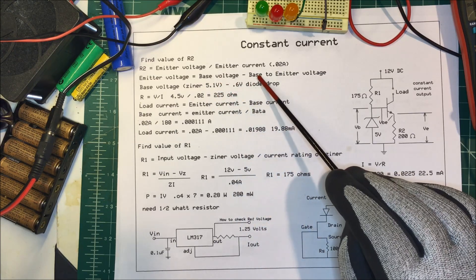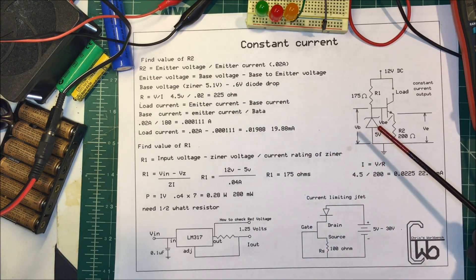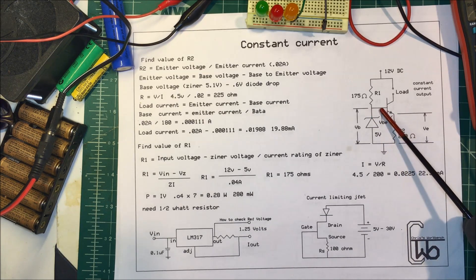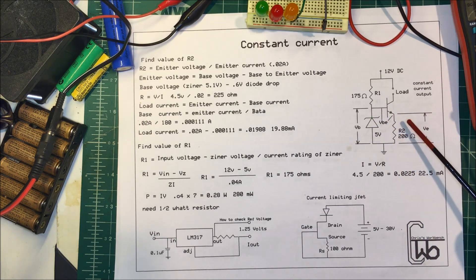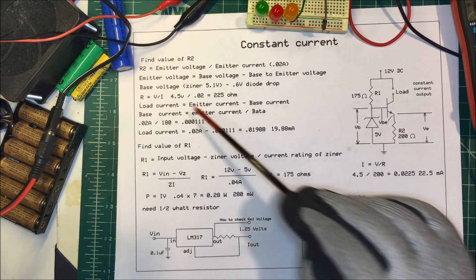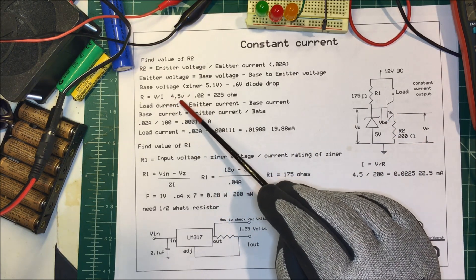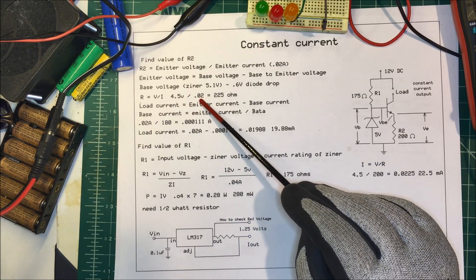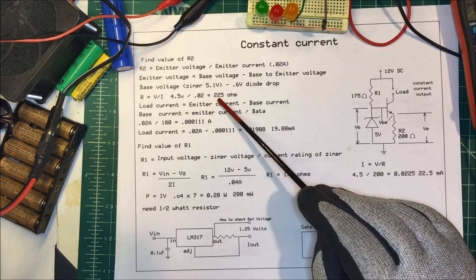The emitter voltage equals the base voltage minus the base-to-emitter voltage. So we have 5.1 volts here, but we're going to drop 0.6 volts across this junction, so from emitter to ground we're only going to have 4.5 volts. We divide that by our 20 milliamps or 0.02 amps and it comes out to 225 ohm resistor.